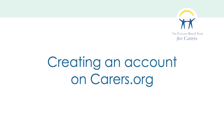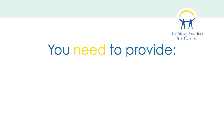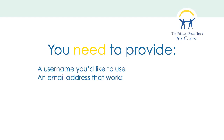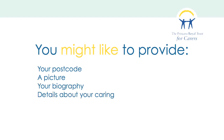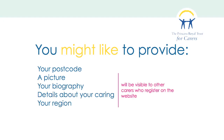So there's quite a lot of information there — let's just run through it again. When setting up an account you do need to provide a username, a working email address, and your first and last name. But you might also want to provide your postcode, a picture, your biography, and details about your caring or your region. Those last four will be visible to other carers on the site, to help people find others who have things in common with them — which is after all what our site's here for.